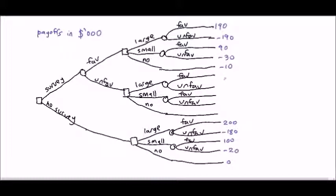For example, for no survey, the payoff for large favorable is $200. But if conduct survey, the payoff is $200 minus $10, which is $190.